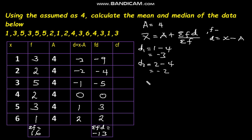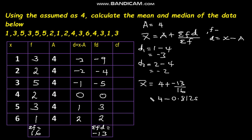Now we shall say our mean is equal to the assumed mean 4, plus negative 13 out of 16. Therefore, this is 4 minus 0.8125, and the mean is equal to 3.1875.